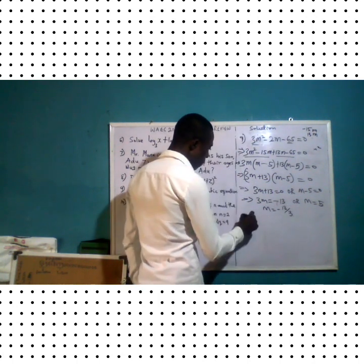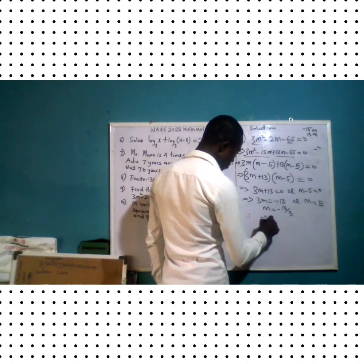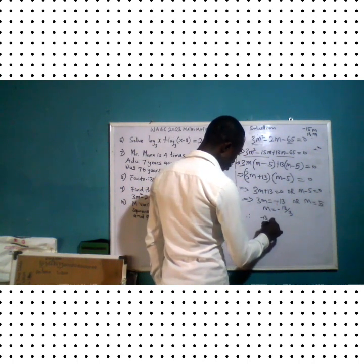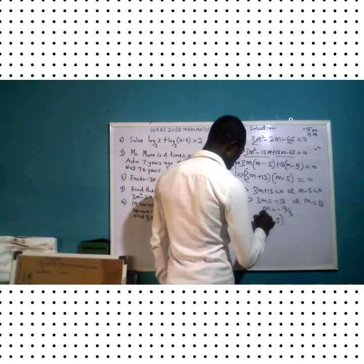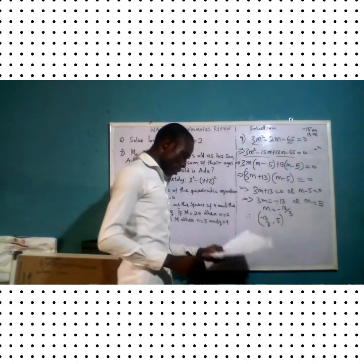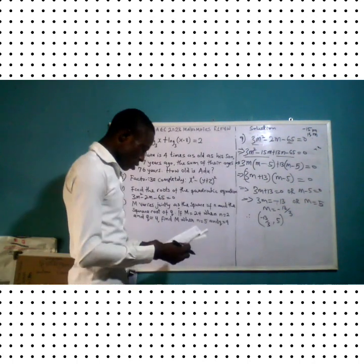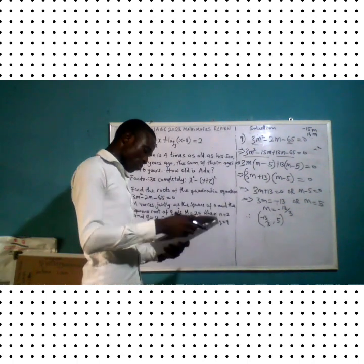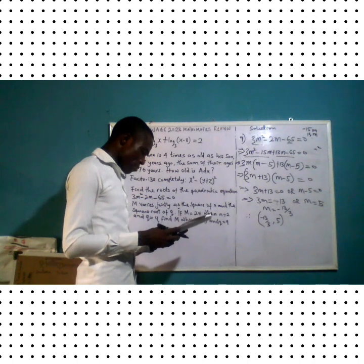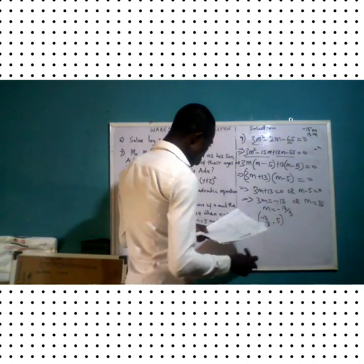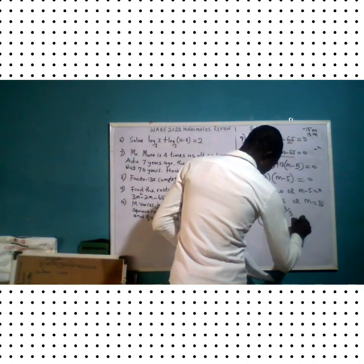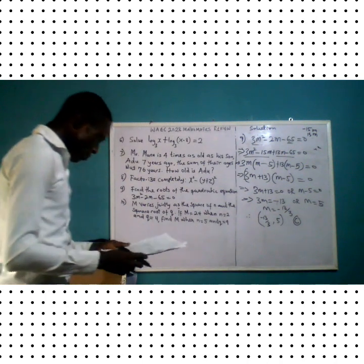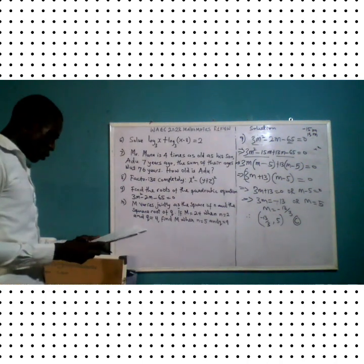Therefore the roots are negative 13 over 3 and 5. Looking at the options, option C is the correct option.